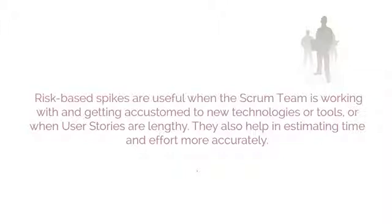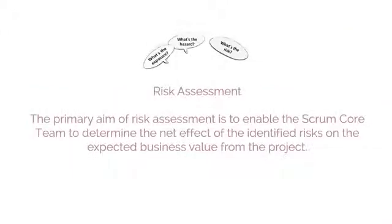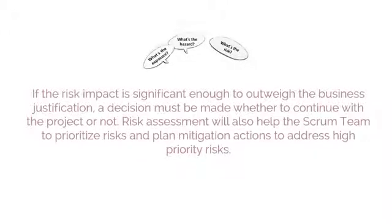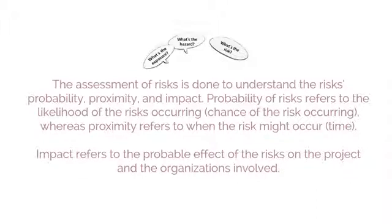The next step in the Risk Management Procedure is Risk Assessment. The primary aim of risk assessment is to enable the Scrum Core team to determine the net effect of the identified risks on the expected business value from the project. If the risk impact is significant enough to outweigh the business justification, a decision must be made whether to continue with the project or not. Risk assessment also helps the Scrum team to prioritize risks and plan mitigation actions. The assessment of risks is done to understand the risk's probability, proximity, and impact. Probability refers to the likelihood of a risk occurring; proximity refers to when the risk might occur; and impact refers to the probable effect on the project and organizations involved.